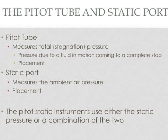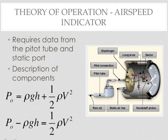Let's focus now on the three instruments that depend on the pitot-static system, starting with the airspeed indicator. The airspeed indicator simply measures the difference between the stagnation pressure and static pressure. As you can see in the bottom of the equation, this difference corresponds to the dynamic pressure, which in turn is a function of velocity or airspeed.